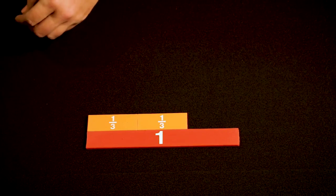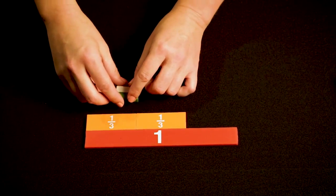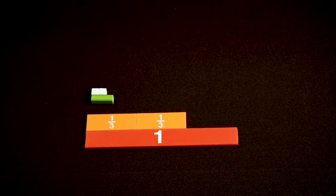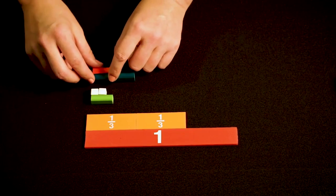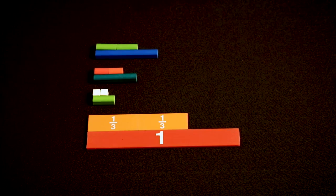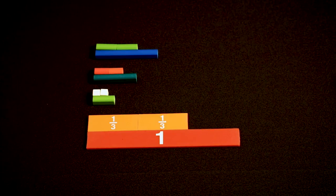I can also use Cuisenaire rods to show the fraction two-thirds. This is also the length model of fractions. Here is an example of two-thirds. But the nice thing about the Cuisenaire rods is that I can show two-thirds in many different ways. So here is an example of two-thirds and here is another example of two-thirds. These all show the length model of fractions.